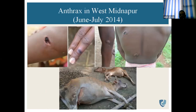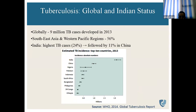These are photographs of humans who contracted the cutaneous form of anthrax, showing carbuncles on the skin. In animals, the dead animals show bloat and bleeding from the anus. The blood that oozes from anthrax-affected animals does not clot. Globally, 9 million TB cases developed in 2013.